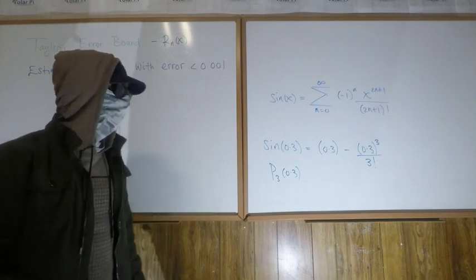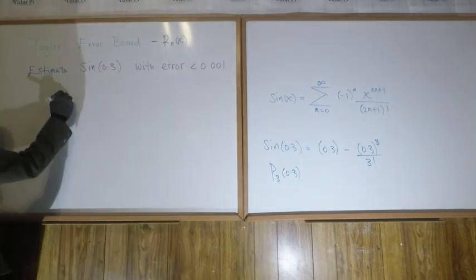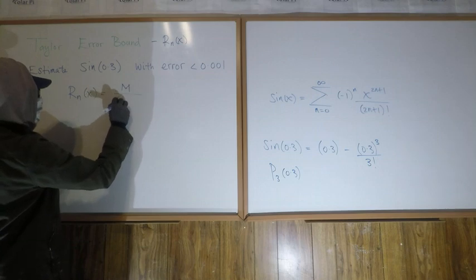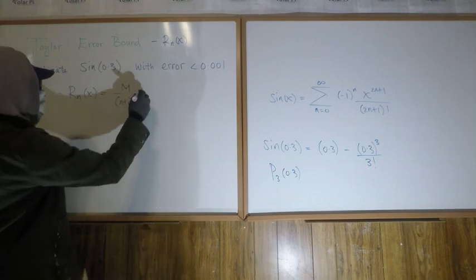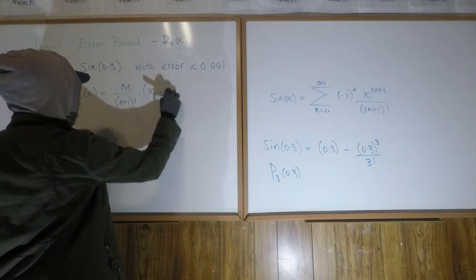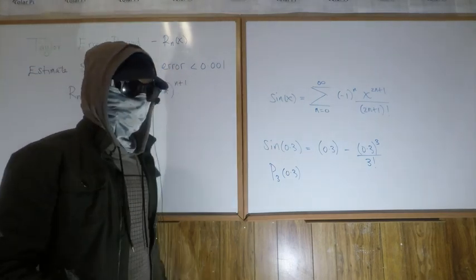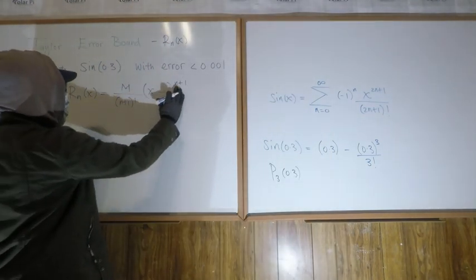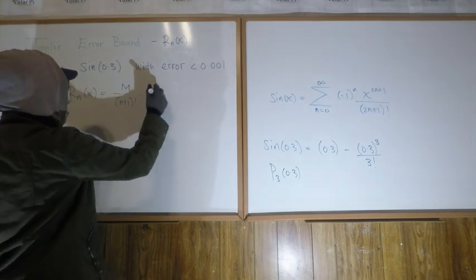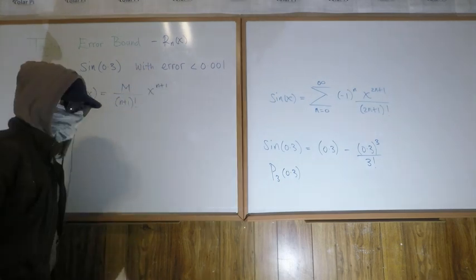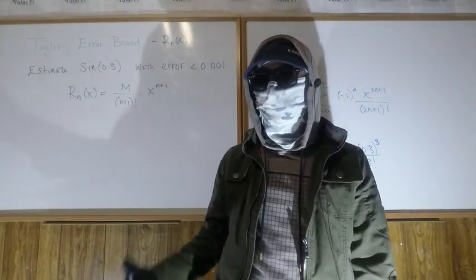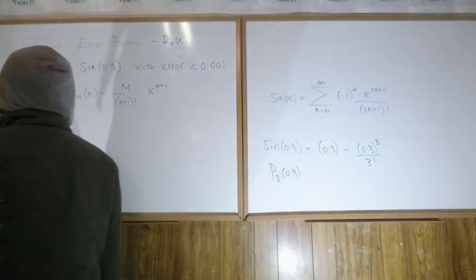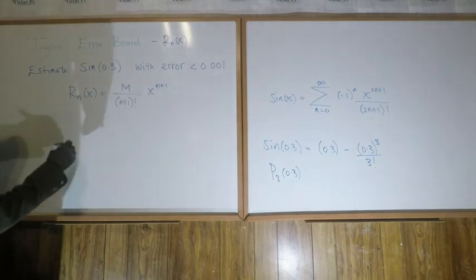We know that the R sub n formula — that is, R sub n of x — equals capital M over n plus 1 factorial, times x minus a to the power n plus 1. Since we're working with Maclaurin series, a is 0, so x minus 0 to the n plus 1 is just x to the n plus 1. I intentionally wrote x minus a in case your need is to do a Taylor series centered away from 0 — a general Taylor, not a Maclaurin.